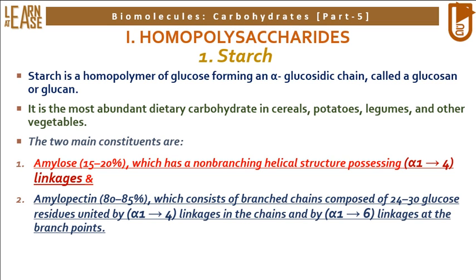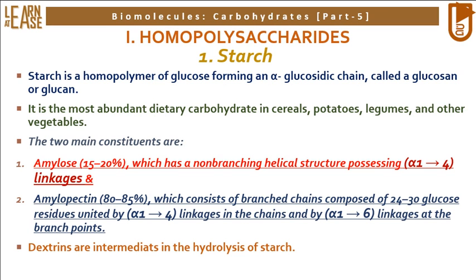The second constituent is amylopectin, which constitutes 80–85% of starch and consists of branched chains composed of 24–30 glucose residues united by alpha-1-4 linkages in the chains and by alpha-1-6 linkages at the branch points.